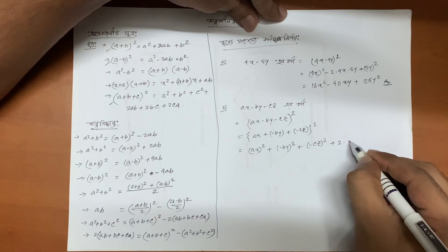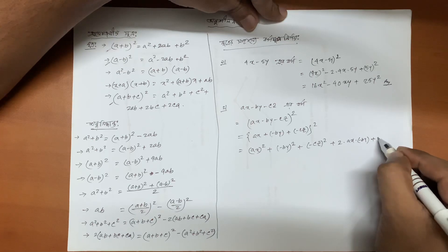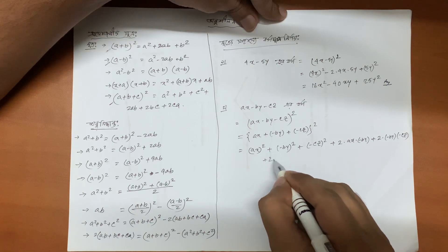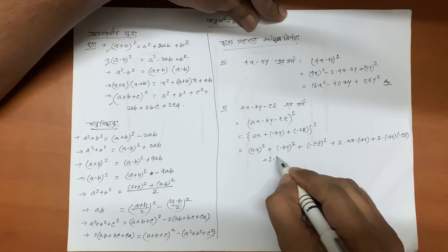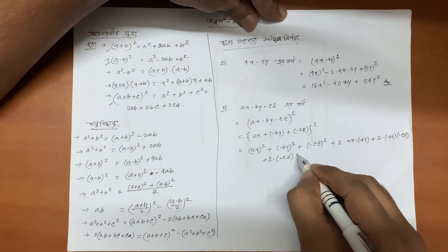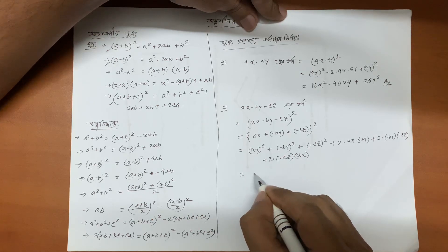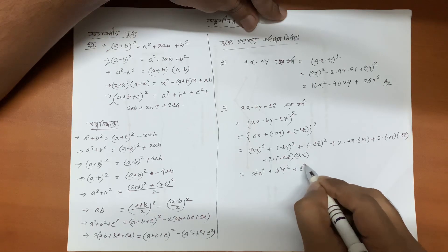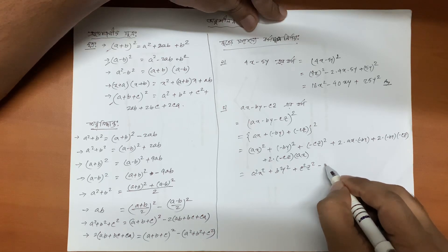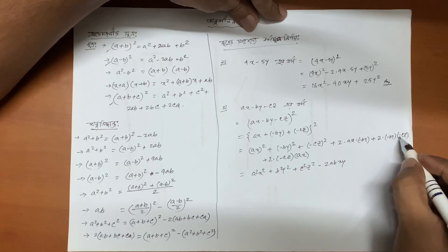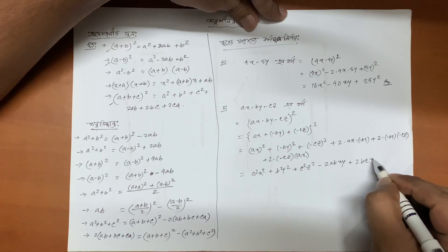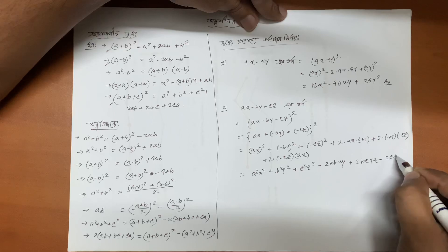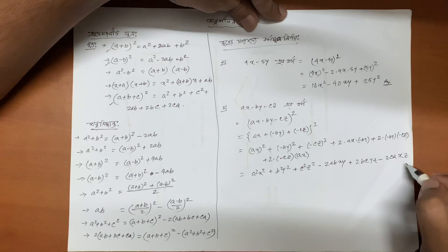Plus 2ab, a is equal to x, b is equal to minus by, plus 2bc, b is equal to minus by, c is equal to minus cz, plus 2bc is equal to 2ca, c, z, a, x. Then this is equal to x square plus b square y square minus cz, a, z square, minus cz z square, plus 2bc·yz then plus minus minus 2ca·xz.